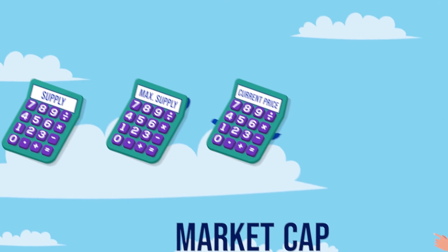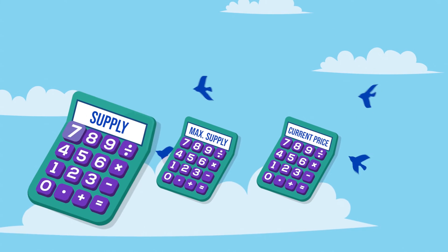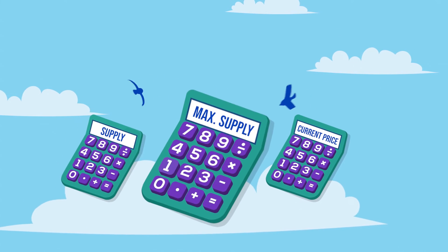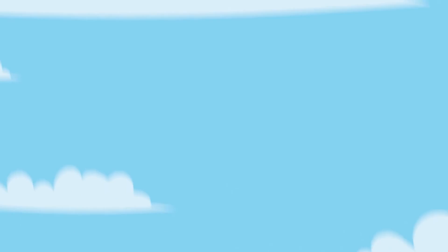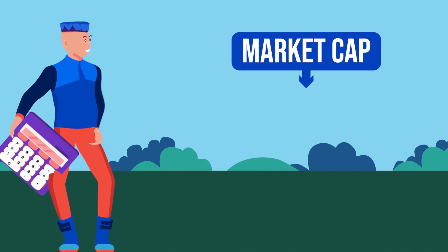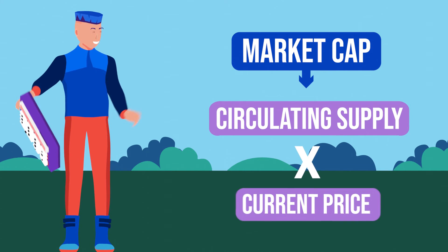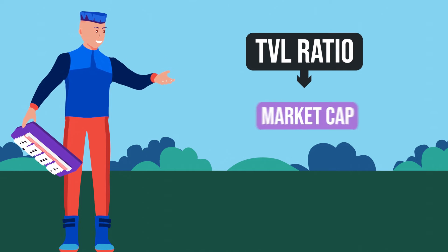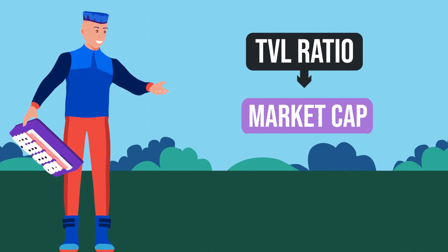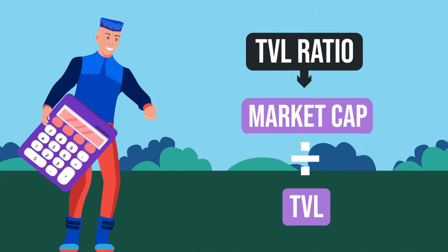This is done by calculating three numbers: the supply, the maximum supply, and the current price. To calculate the token's current market cap, multiply the circulating supply by the current price. Then, to get the TVL ratio, take that market cap figure and divide it by the TVL.